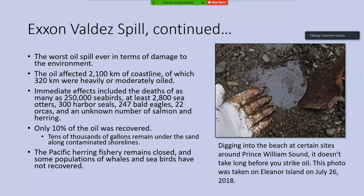The Exxon Valdez spill was the worst spill ever in terms of damage to the environment. The oil ended up making its way onto shore in some of the most pristine environments in the world, and essentially nothing was done to stop it. All of the oil that was spilled made its way on shore to damage marine and coastal environments, affecting 2,100 kilometers of coastline, of which about 320 kilometers were heavily or moderately oiled, causing severe damage.